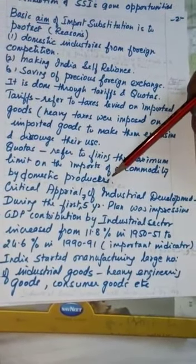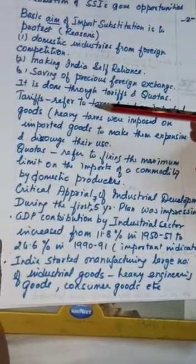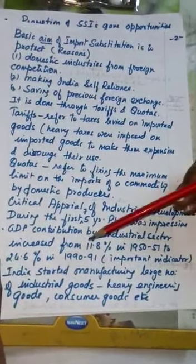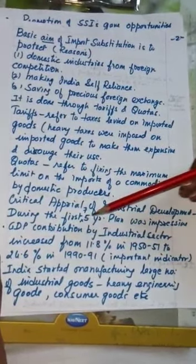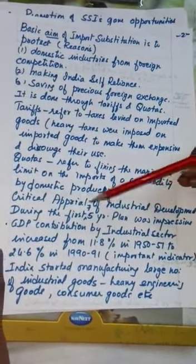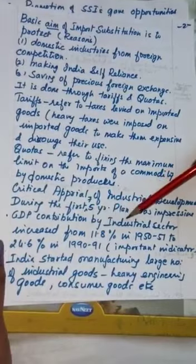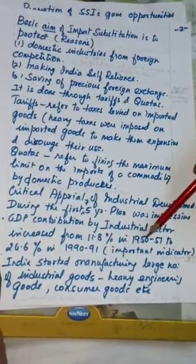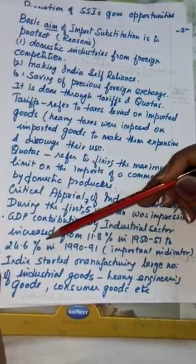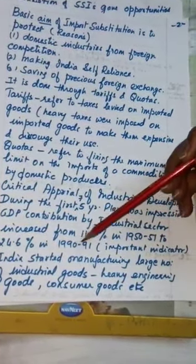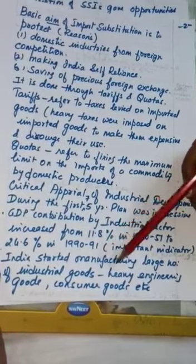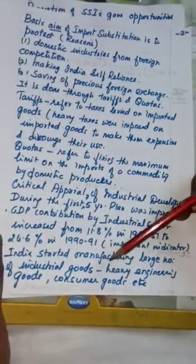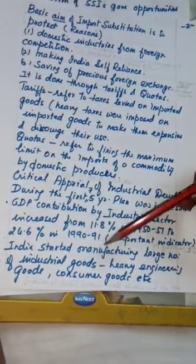What were the effects of these policies? In the critical appraisal of industrial development, the first seven five-year plans were very impressive. GDP contribution by the industrial sector increased from 11.8 percent in 1950-51 to 24.6 percent in 1990-91. There was a six percent annual growth rate of the industrial sector.